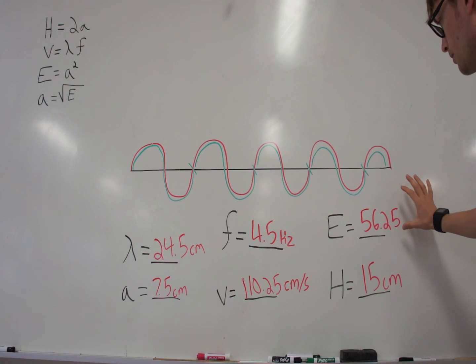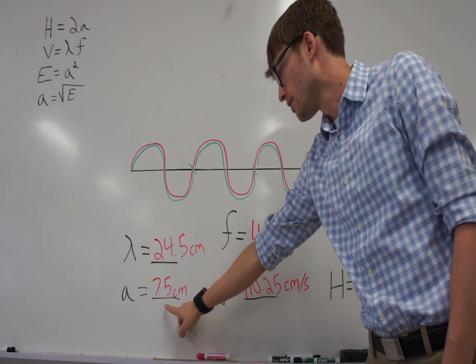For example, if I found the square root of 56.25, that would come out to 7.5.